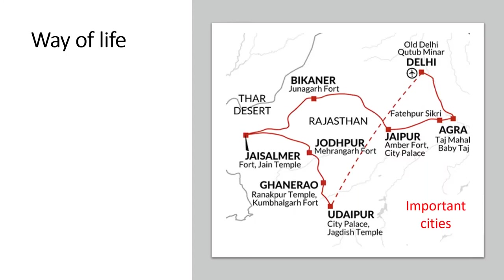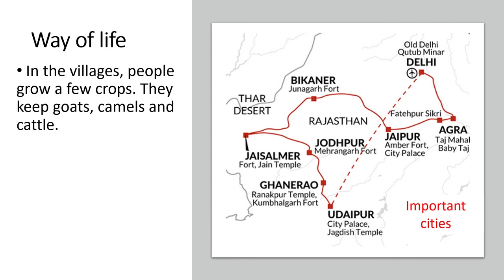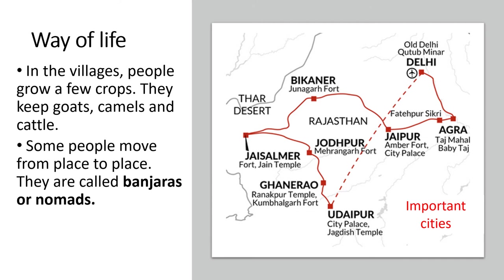Let's know about the way of life of people over there. The towns and villages in this desert region have grown around the few water sources that exist here. Jaipur, Jaisalmer, Jodhpur, Bikaner and Udaipur are some important cities. In the villages, people grow a few crops and they keep goats, camels and cattle.